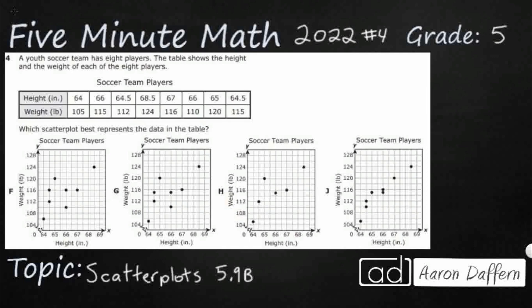So we've got a youth soccer team with 8 players, and we've got a table here that shows their height and weight — the height in inches and the weight in pounds. We're simply supposed to represent this as a scatter plot.